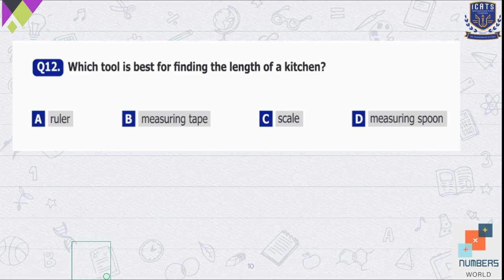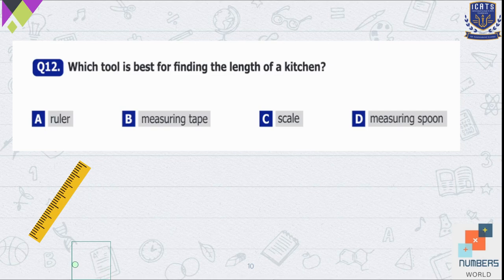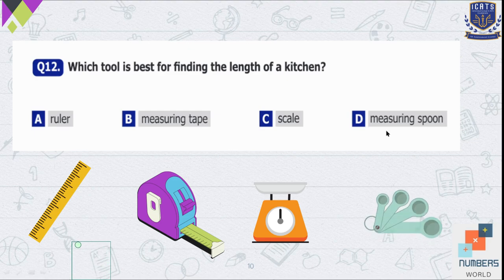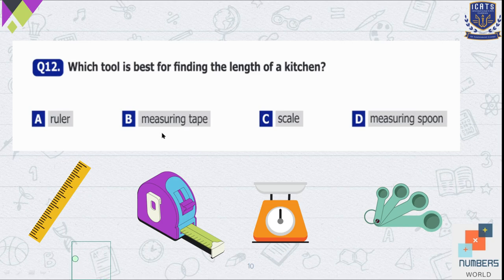Question number 12 — which tool is best for finding the length of a kitchen? Option A is a ruler, used to measure objects usually less than 12 inches or one foot. Option B is measuring tape, used to measure longer objects or the length and width of a room — this can be our answer. Option C is a scale, used to measure weights in grams or kilograms. Option D is a measuring spoon, used for very small amounts of liquids or solids. So option B is the appropriate one.